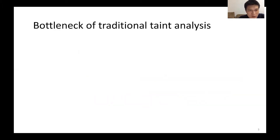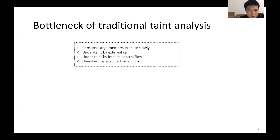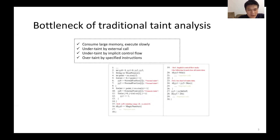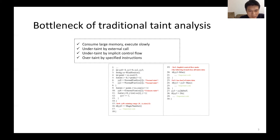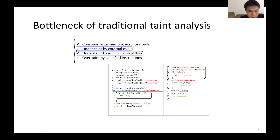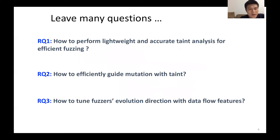Similarly, traditional taint analysis has many limitations. Its overhead is high because it analyzes each executed instruction, consuming a lot of memory and executing very slowly. Furthermore, it suffers from serious under-taint and over-taint because of implicit control flow and special instructions in real-world programs. In addition, traditional taint analysis needs manual effort when encountering unknown instructions and external code.